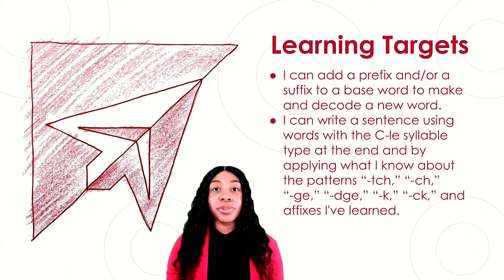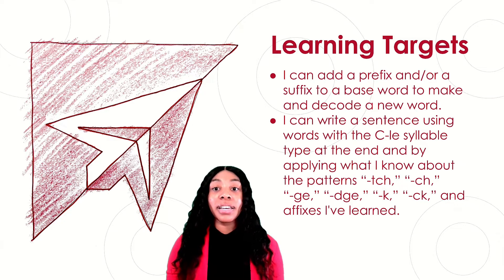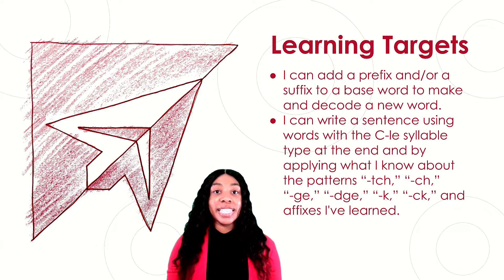We have two new learning targets. Please follow along with me as I read them. Our first learning target says I can add a prefix and a suffix to a base word to make and decode a new word. The second learning target says I can write a sentence using words with the consonant LE syllable type at the end and by applying what I know about the patterns TCH, CH, GE, DGE, K, CK, and affixes I've learned.